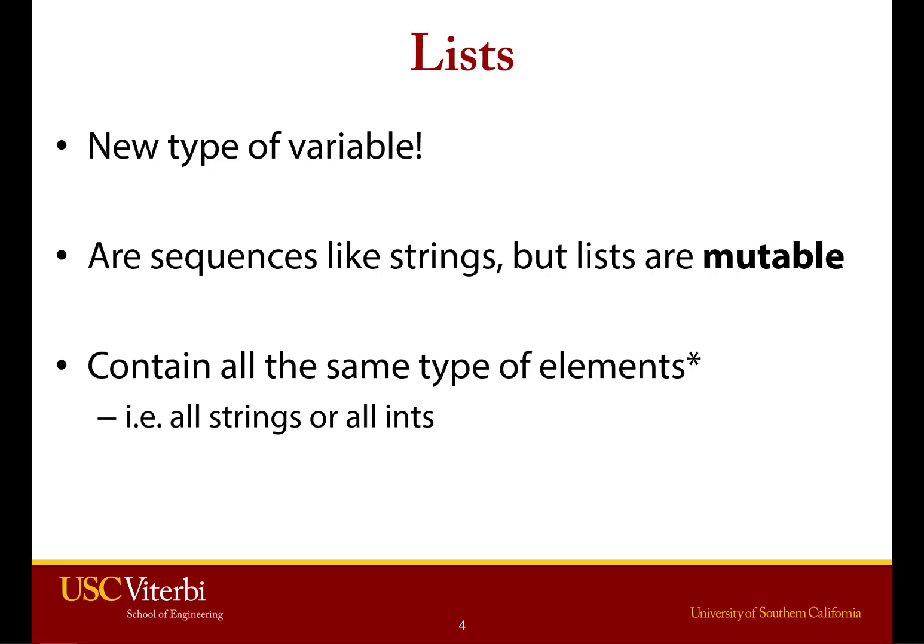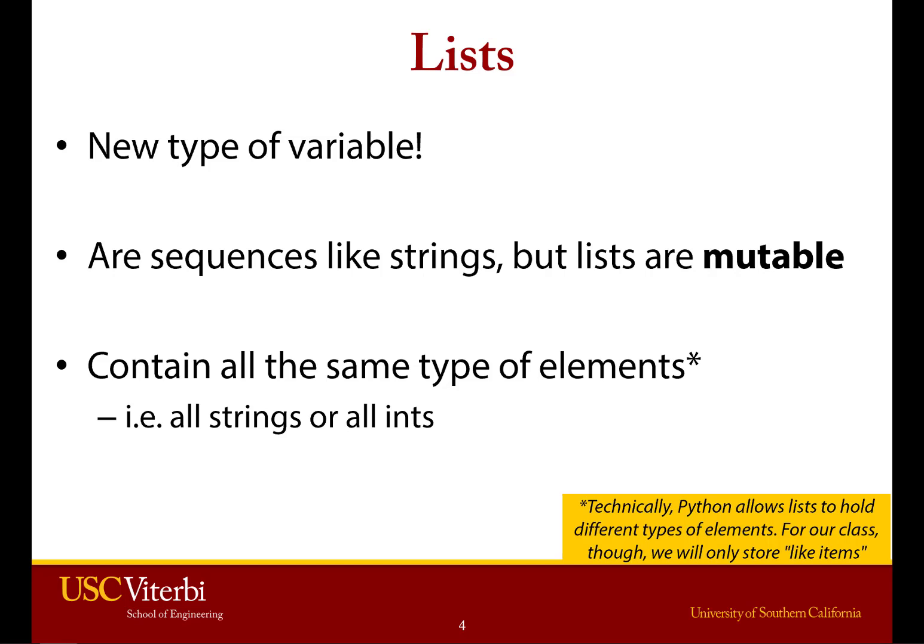Now, in general, we're going to consider lists that have only the same type of elements — meaning all strings, all ints, all floats, et cetera. Realize that Python does allow you to have lists that combine different types of variables, like lists that contain strings and floats and ints at the same time. But just for simplicity, in this class, we're going to consider only lists that have all the same type.